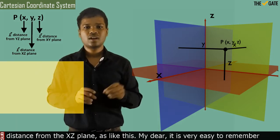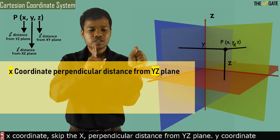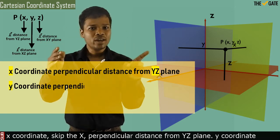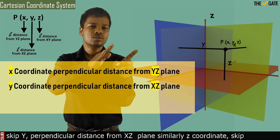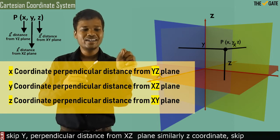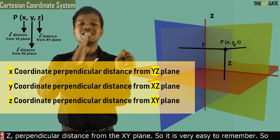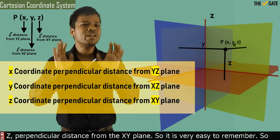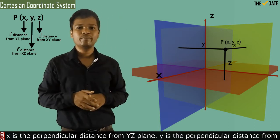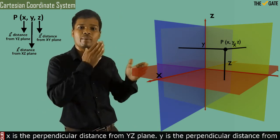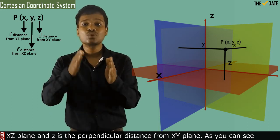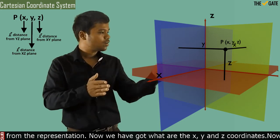It is very easy to remember: for the x coordinate, skip the x — it is the perpendicular distance from the y-z plane. For the y coordinate, skip the y — it is the perpendicular distance from the x-z plane. Similarly, for the z coordinate, skip the z — it is the perpendicular distance from the x-y plane. So x is the perpendicular distance from the y-z plane, y is the perpendicular distance from the x-z plane, and z is the perpendicular distance from the x-y plane, as you can see from the representation.